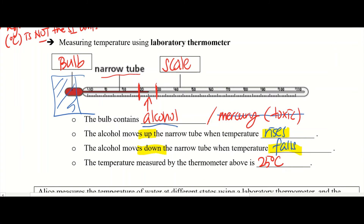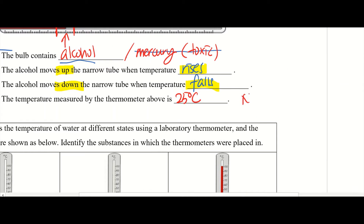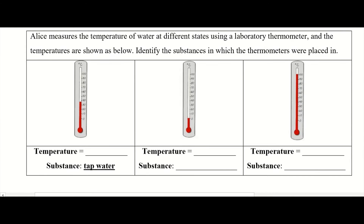Now, we said that the standard unit for temperature is in Kelvins, but for all the thermometers that we have, we measure either in degree Celsius or degree Fahrenheit depending on which country made it. In Singapore, the thermometers we use read in degree Celsius. Please do not forget the units — because in an exam, if you write down just 25 without telling me the unit, marks will be deducted. The examiner won't know if it's 25 Fahrenheit, Kelvins, or degree Celsius. You must write down the units very clearly.